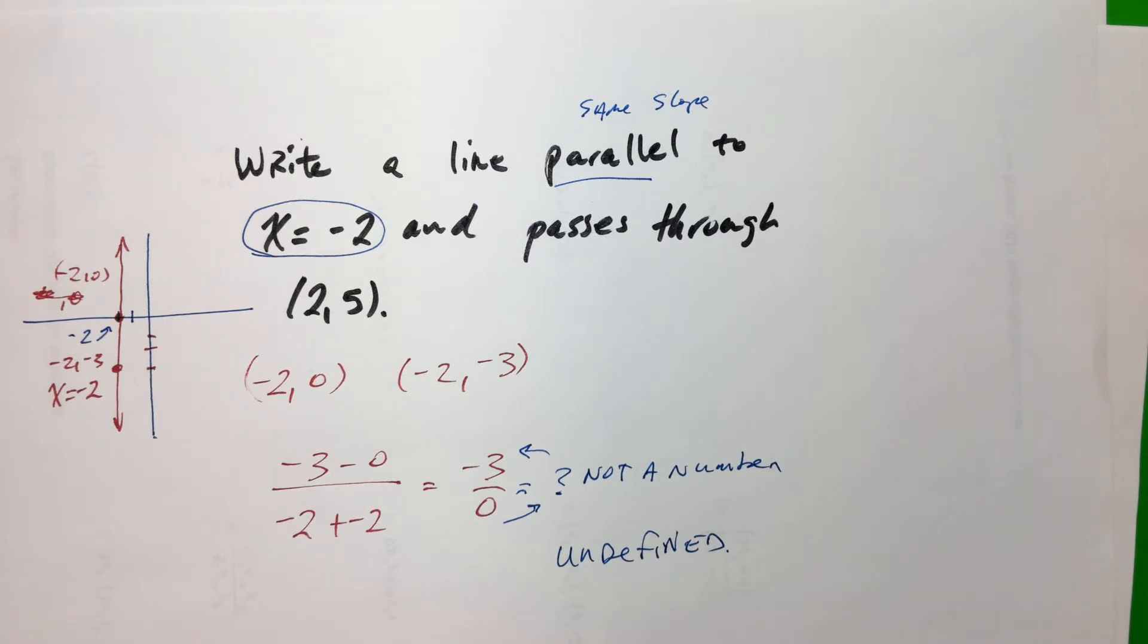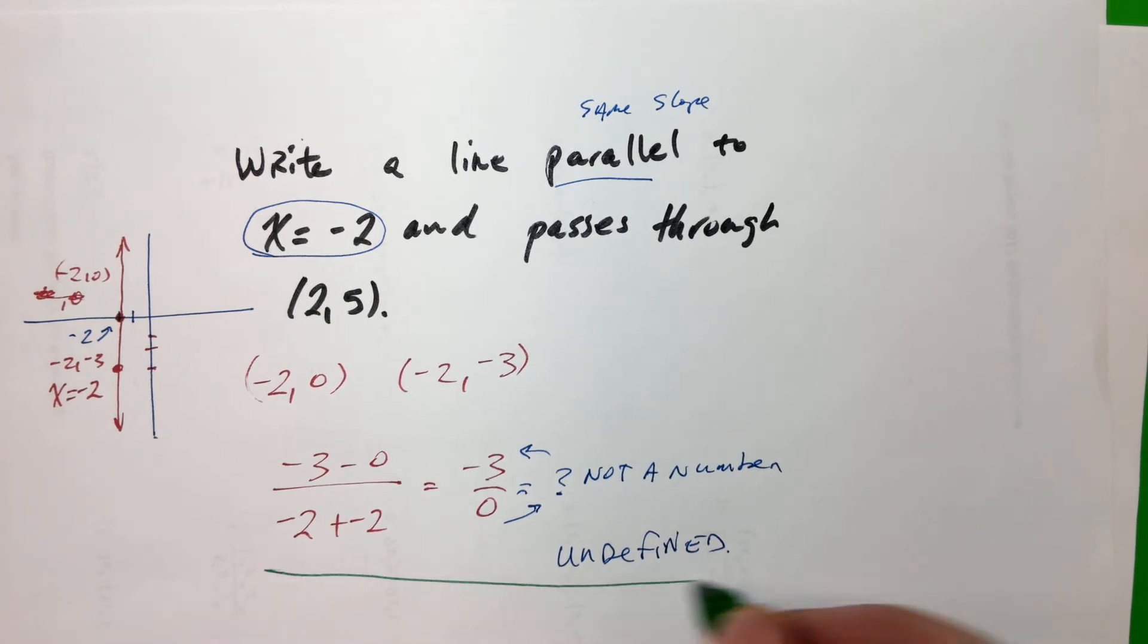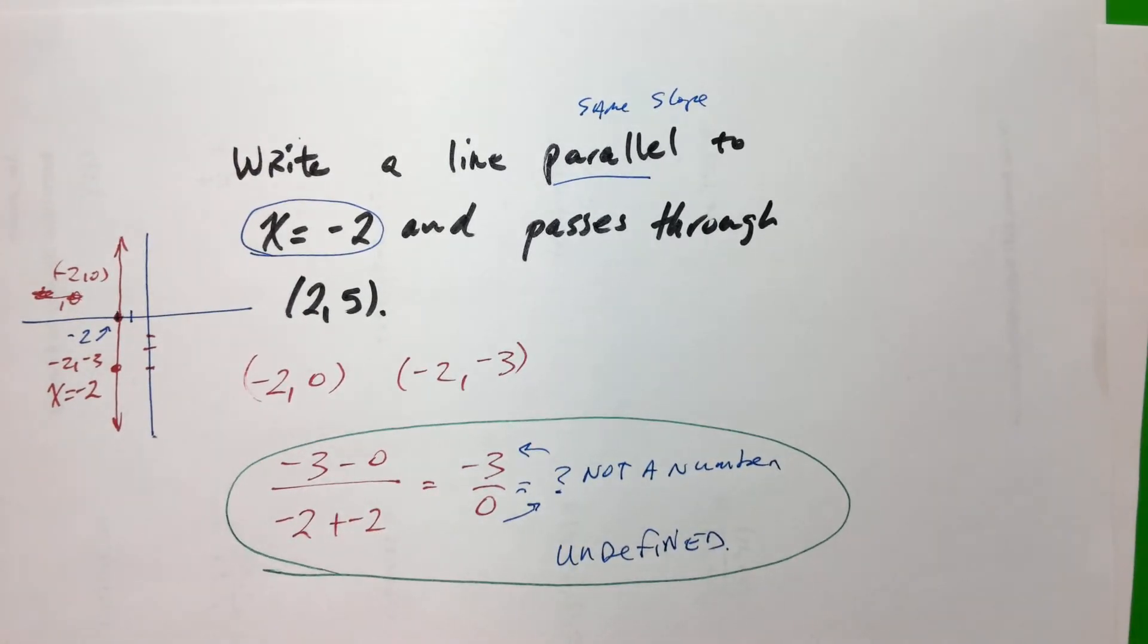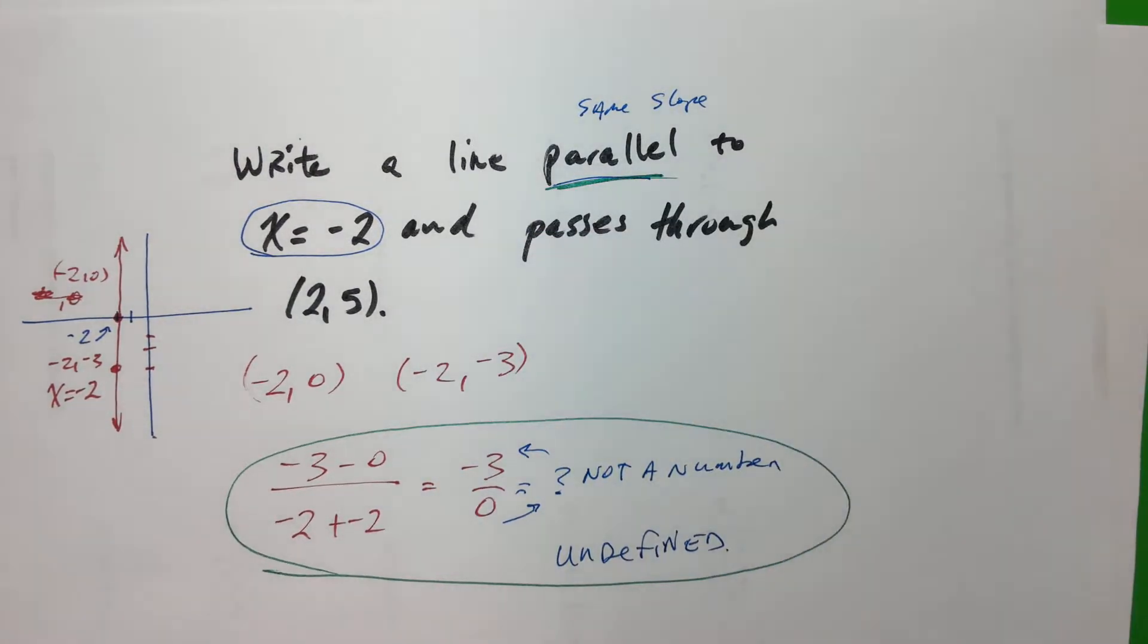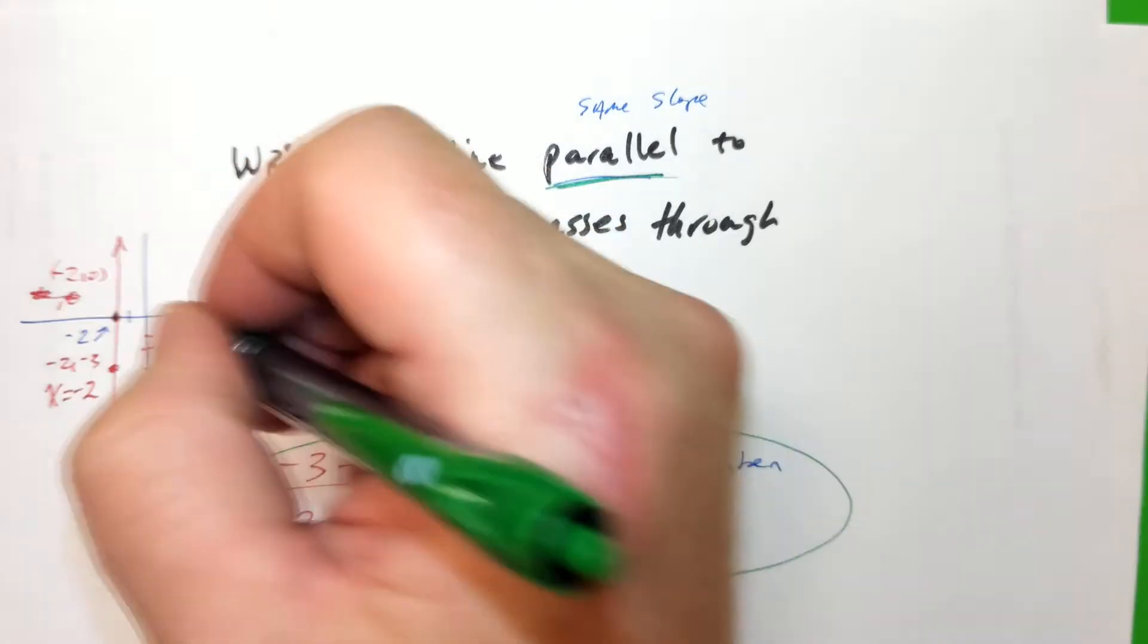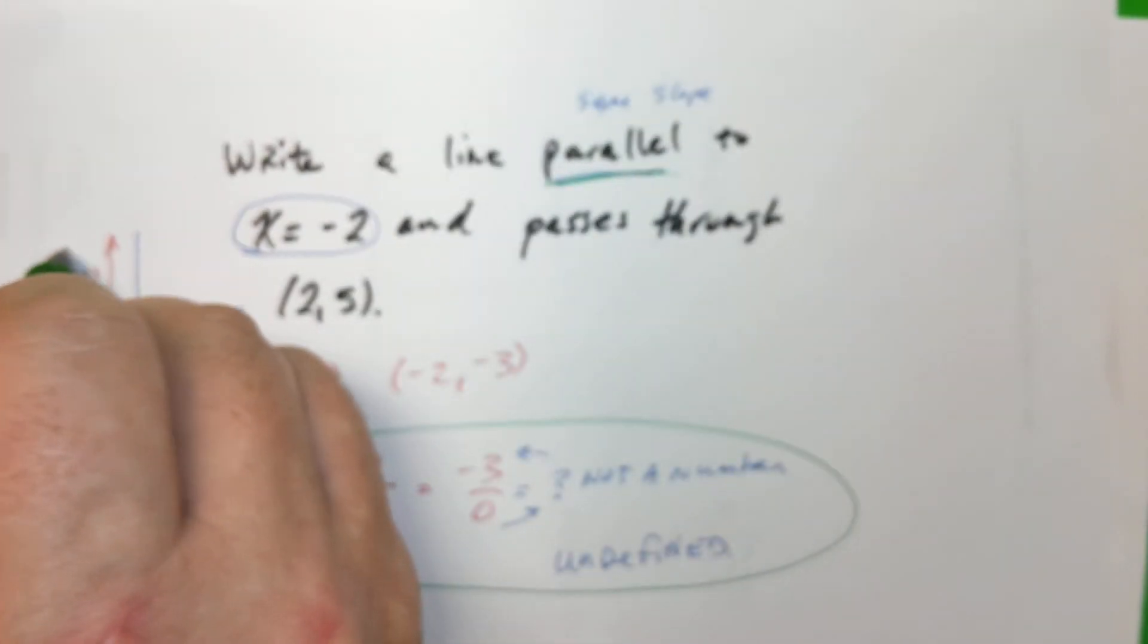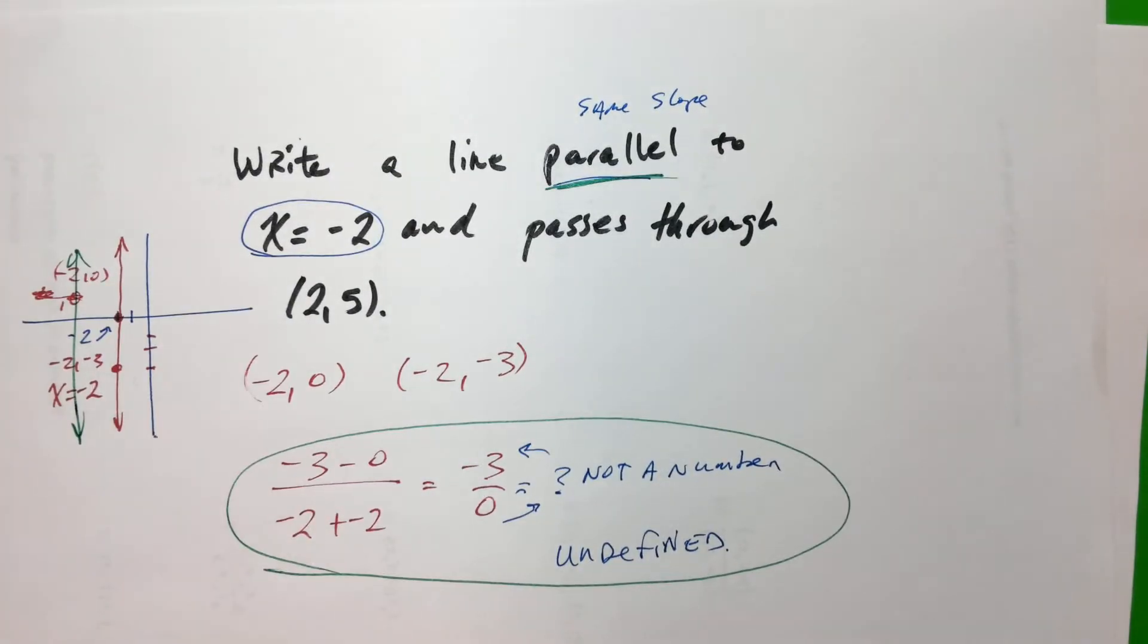So the key information though is that this is kind of like review of some important ideas from before. But the thing we need is parallel. So parallel means that it's going to be a vertical line just like the other one, right? The only thing is it has to go through this point right here, 2, 5.